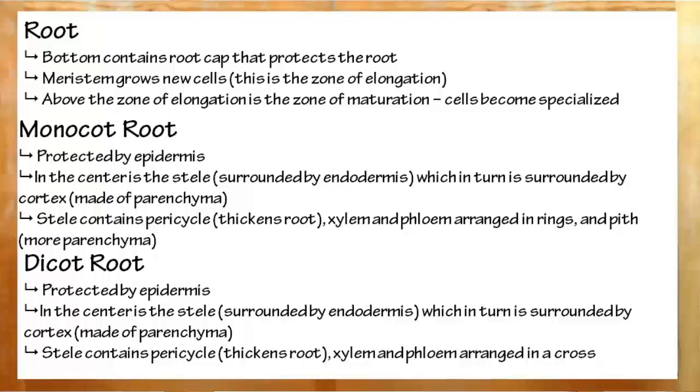Roots have at the bottom a root cap, which is a bunch of densely packed cells, very hard, that secretes a lubricant so that the root can move through the ground. Immediately above that, the meristem, which produces new cells, these will end up in the zone of elongation, and ultimately the zone of maturation, where they become actually what they're going to do.